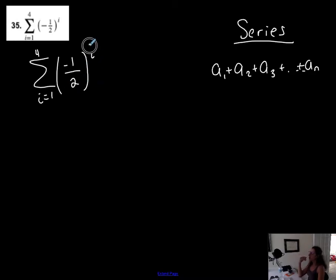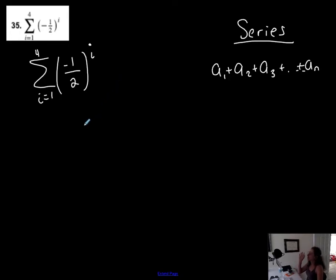This is the formula I use to find the terms of the series. Notice that this is a variable i, starting at 1, and this is the same variable i in the formula. If the variable in the formula does not match the variable at the bottom, you cannot substitute those numbers. For you, it should match all the time, but in the future it might not. So if this were k, I would not plug these numbers in here.